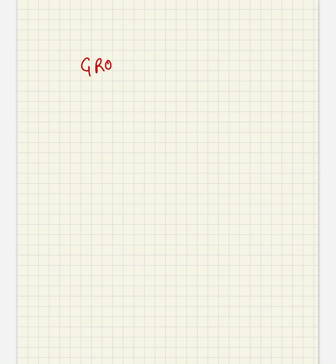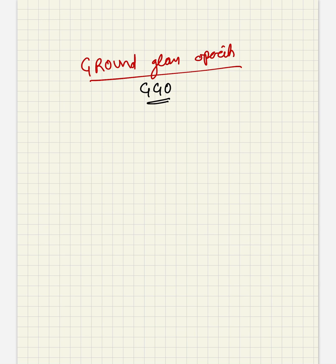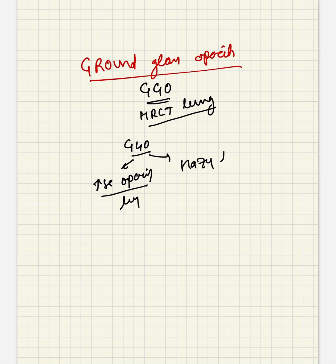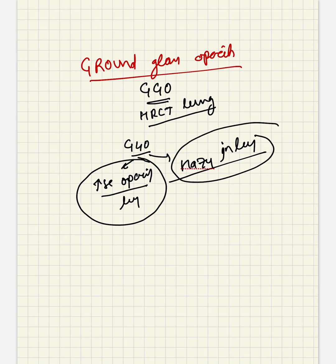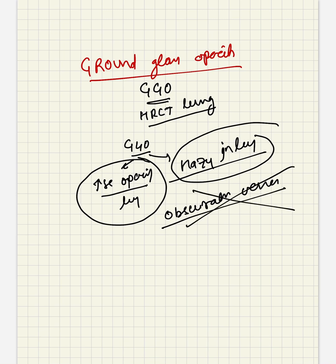Today we are going to discuss the topic ground glass opacity, or in short form GGO. Ground glass opacity in HRCT lung refers to an increase in the opacity of the lung, or haziness in the lung. There will be an increase in the opacity or haziness in the lung without associated obscuration of vessels. So we can call this ground glass opacity.